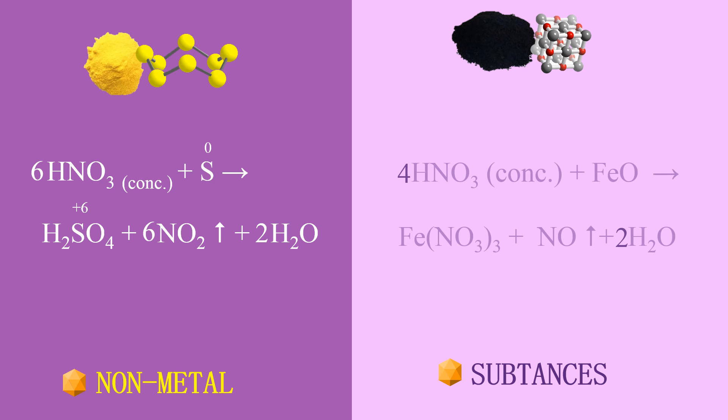Likewise, on the right, we have iron +2 before the reaction, and iron +3 after the reaction with nitric acid. Now, let's put the knowledge that you've learned into practice.